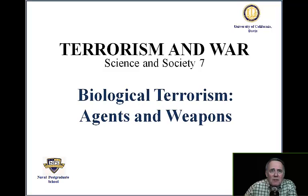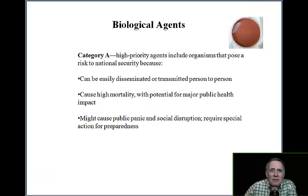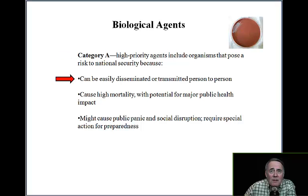Biological Terrorism: Agents and Weapons. Biological Agents Category A, or High-Priority Agents, include organisms that pose a risk to national security because they can be easily disseminated or transmitted person-to-person, they cause high mortality with potential for major public health impact, they might cause public panic and social disruption, and they require special action for preparedness.